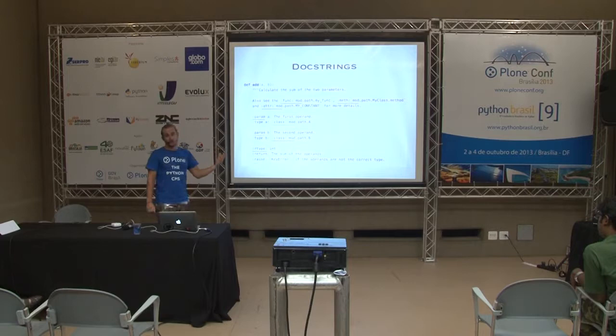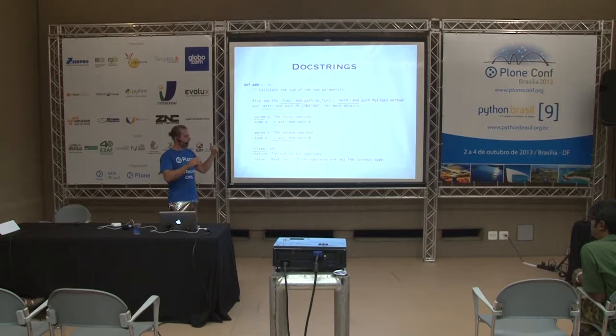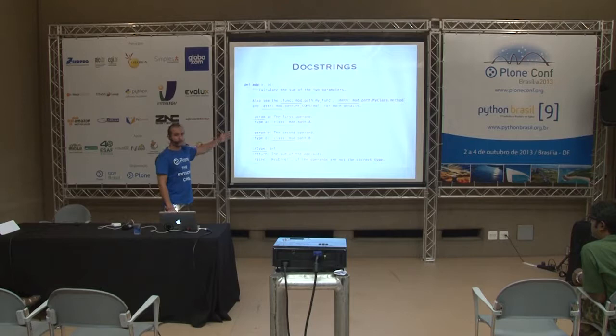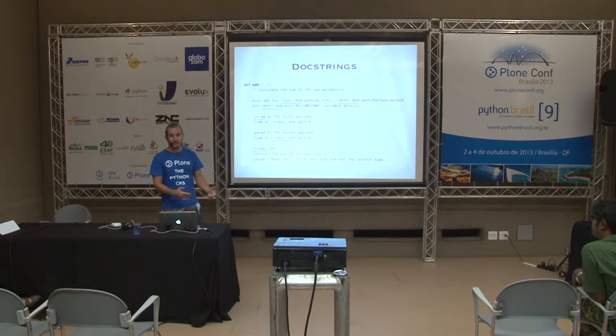The Plone API source code itself is a good example of this — we try to make it a good example. Also, the advanced documentation of Plone API is actually generated from the code. If you write code like this in Plone core, we can also do that for Plone core — we can have the full Plone core API generated documentation in one place. That would be really cool — you'd know what a method does and what happens if you pass something in.